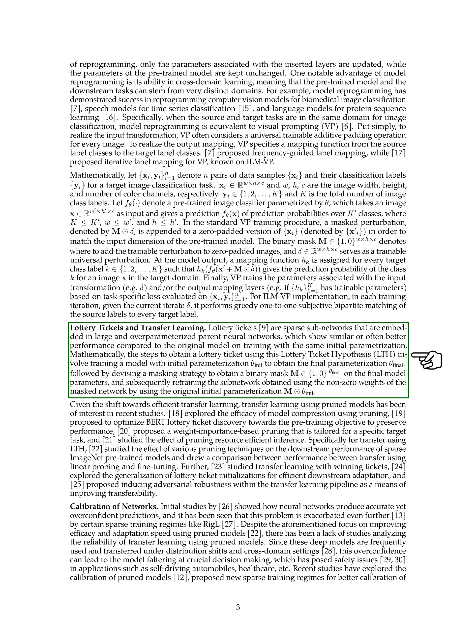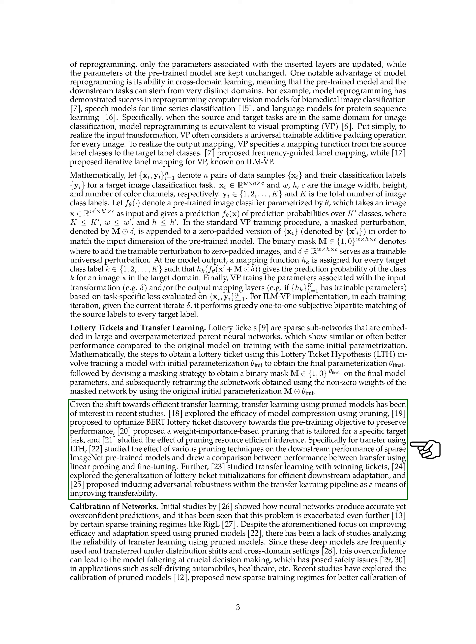Moving on to lottery tickets and transfer learning — lottery tickets are sparse subnetworks embedded within larger, over-parameterized parent neural networks. These subnetworks often perform as well as, or even better than, the original model when trained with the same initial parameters. The process of obtaining a lottery ticket involves training a model, devising a masking strategy to obtain a binary mask on the final model parameters, and then retraining the subnetwork using the non-zero weights with the original initial parameters. Given the trend towards efficient transfer learning, using pruned models for transfer learning has been a topic of interest, with researchers exploring model compression using pruning and optimizing BERT lottery ticket discovery to preserve performance.